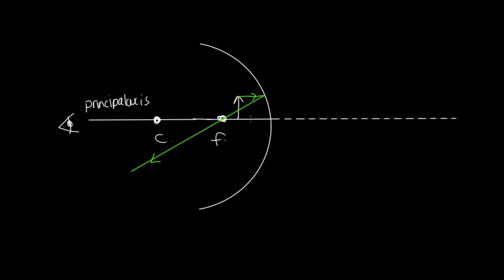The second ray we draw comes from the focal point and goes to the top of the object, then is reflected off the mirror. When reflected, having come from the focal point, it travels parallel to the principal axis. Now these rays are not converging at all, and no image is formed here. The image is actually formed behind the mirror, because what our eye sees is these rays coming towards it without realizing they've been reflected. So they appear to come from behind the mirror, and where the two rays cross is where we see the image.